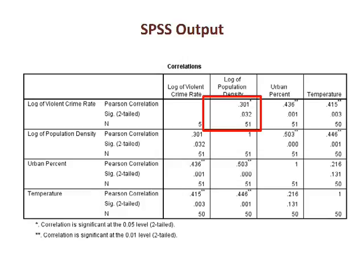The box that I highlighted shows the association between the log of the violent crime rate and the log of population density. Violent crime rate is the row variable, and population density is the column variable.